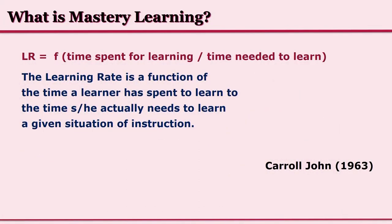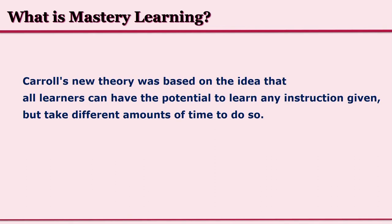Then what does mastery learning say? Mastery learning, in contrast, says that learning rate is a function of time span for learning divided by time needed to learn. The learning rate depends on whatever time a learner has spent to learn relative to the time he or she actually needs to learn in any given instructional situation. Carroll's theory was based on the idea that all learners have the potential to learn any instruction given, but take different amounts of time to do so.